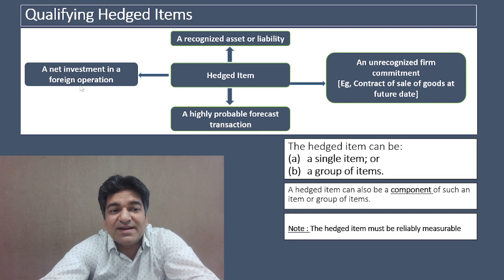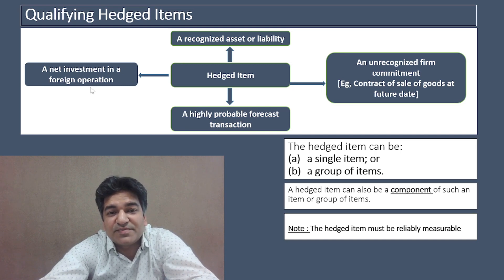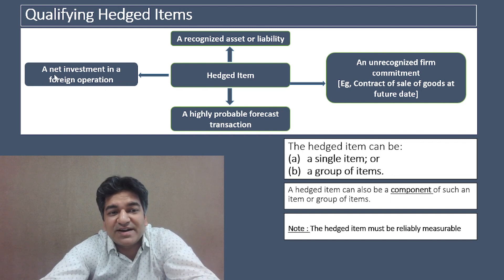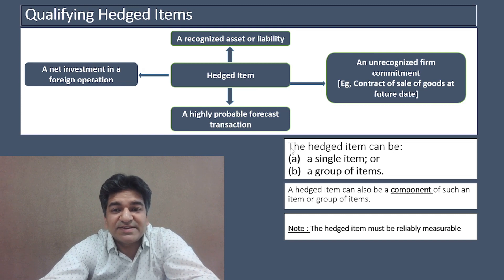Ind AS 109 also says that a net investment in a foreign operation can also be a hedged item. An entity may have a subsidiary, associate, or joint venture in a foreign country — that is a foreign operation. So a net investment in a foreign operation can be a hedged item. We will be discussing net investment in a foreign operation in another video that we will upload soon.